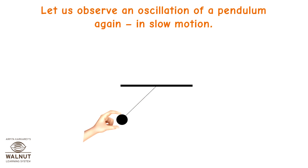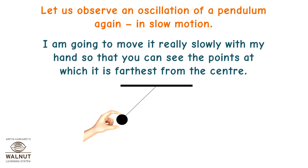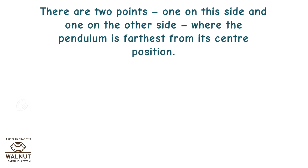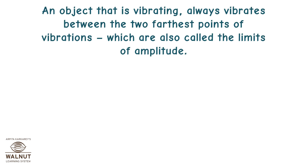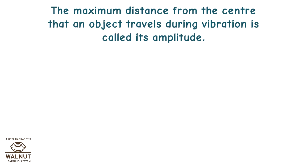Let us observe an oscillation of a pendulum again in slow motion. I am going to move it really slowly with my hand so that you can see the points at which it is the farthest from the centre. There are two points — one on this side and one on the other side — where the pendulum is the farthest from its centre position. This distance from the farthest point to the centre is called the amplitude of the oscillation. An object that is vibrating always vibrates between the two farthest points of vibration, which are also called the limits of amplitude.